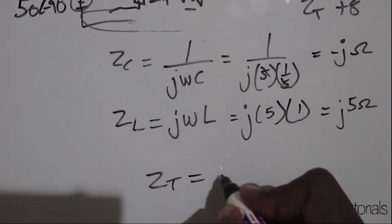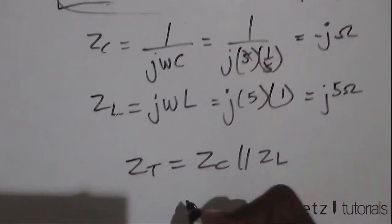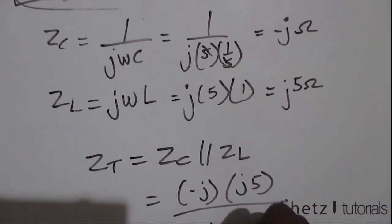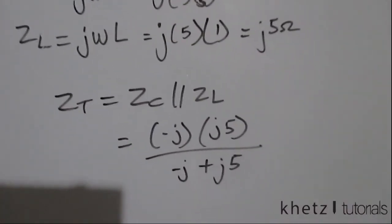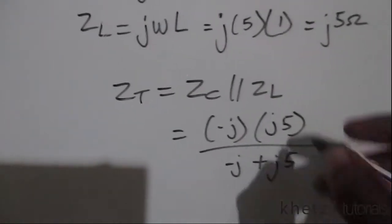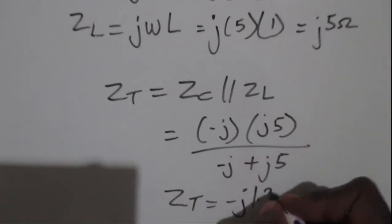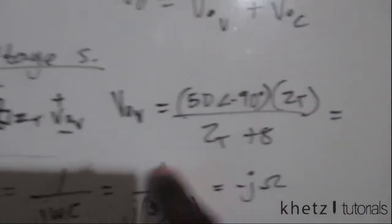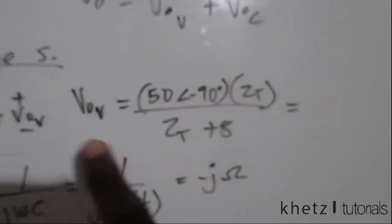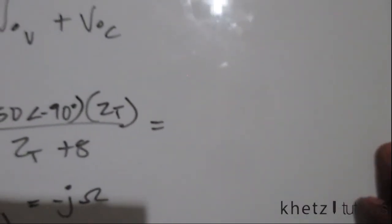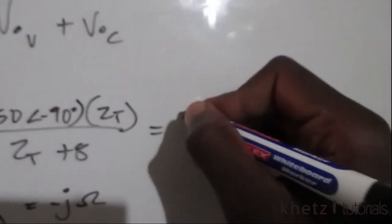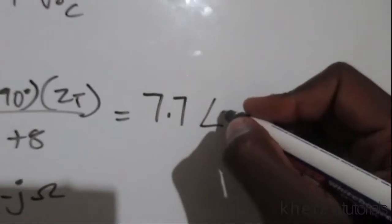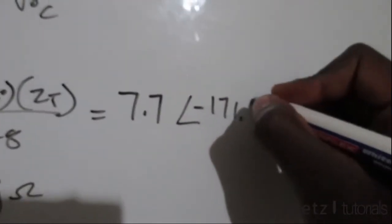ZT is the parallel combination of ZC and ZL: (−j × j5) divided by (−j + j5). Punching this into your calculator gives ZT = −j1.25. Taking that ZT into the voltage divider equation gives us the voltage across ZT, which is the contribution of the voltage source. The answer you should get is 7.7 with an angle of −171.12 degrees.